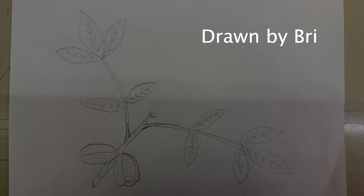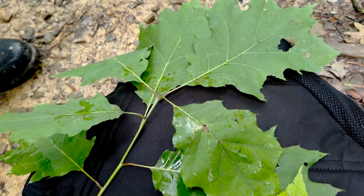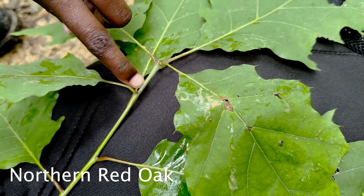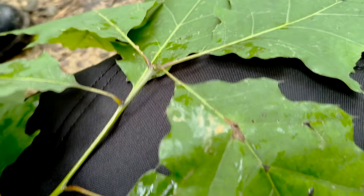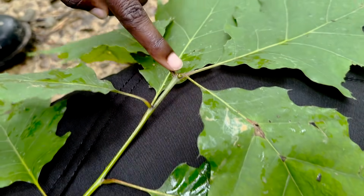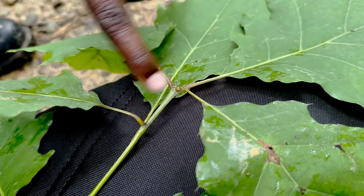The next step is identifying whether leaves are compound or simple. We can see this using the shag bark hickory leaves and the northern red oak leaves. It's important to notice that the base or the bud of a leaf is swollen and the leaflets coming off the stem do not have a swollen bud. The shag bark hickory leaf grows out of the branch and has leaflets growing from it, making it compound, whereas simple trees such as the northern red oak have leaves growing straight out of the branch.